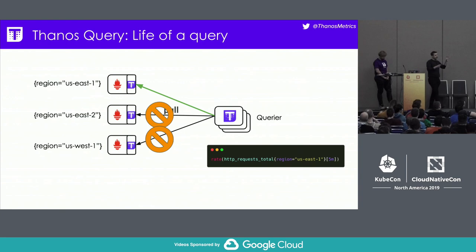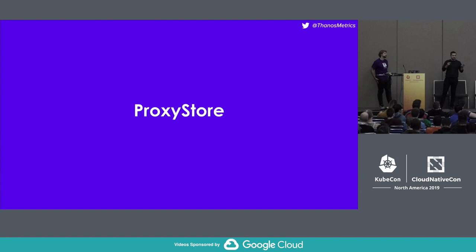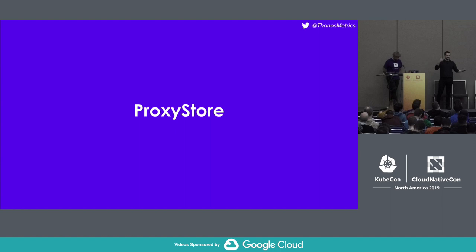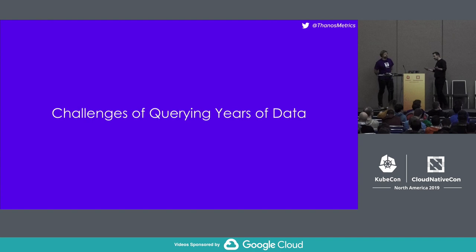I talked about all of this in the sense of the querier, but this is actually an abstraction in Thanos that we call the proxy store. This concept can be reused beyond just the querier. It hasn't been fully implemented yet but is being discussed. I think it's really cool that we have these abstractions to think about on a more abstract level. That's what I wanted to share about the Store API.